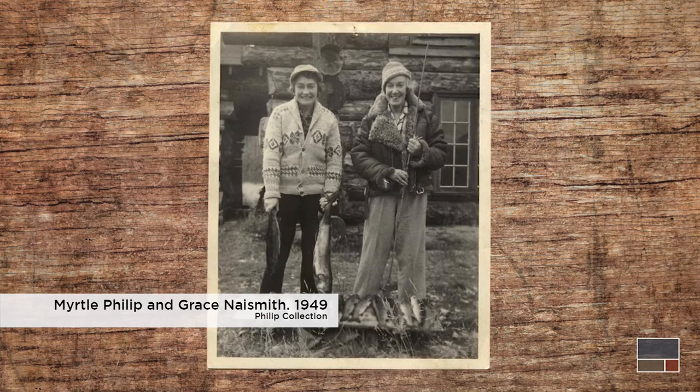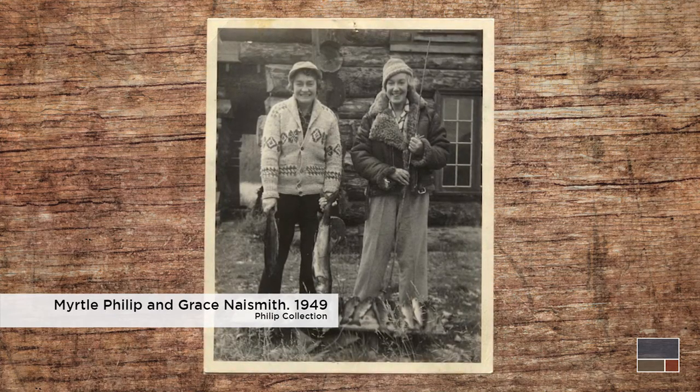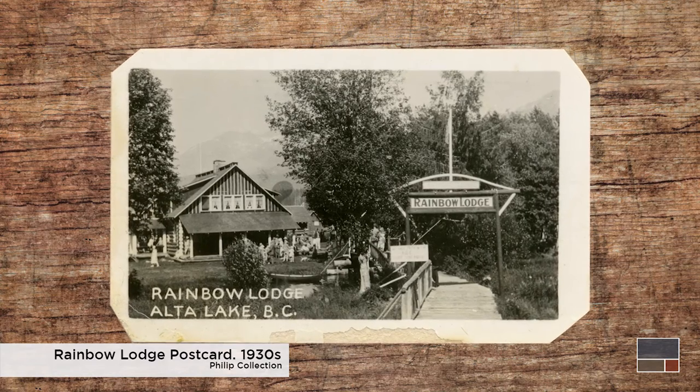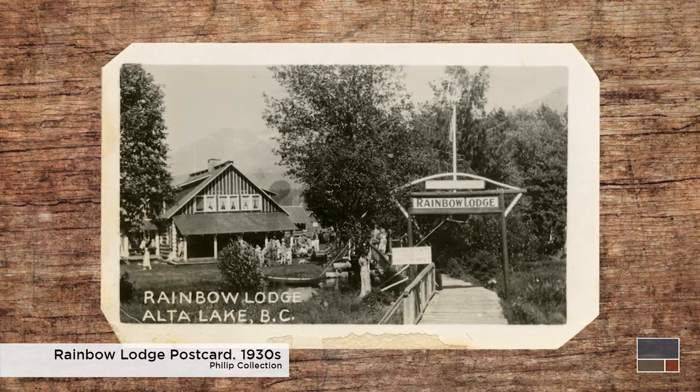The first fishing lodge in the Whistler Valley opened in 1914. It was called Rainbow Lodge and was located on Alta Lake, the same place where Rainbow Park is located today.